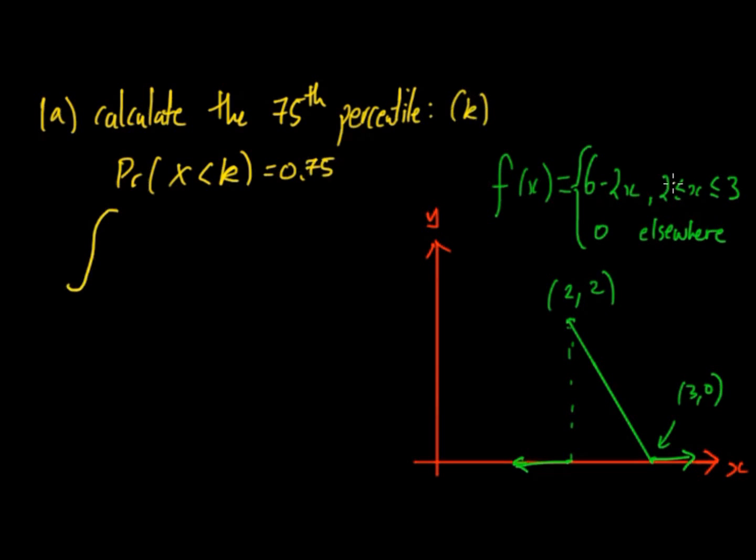So we have f(x) here. So what we can do is we can say that the top limit has to be K, the bottom limit has to be 2 and then the middle is 6 minus 2x.